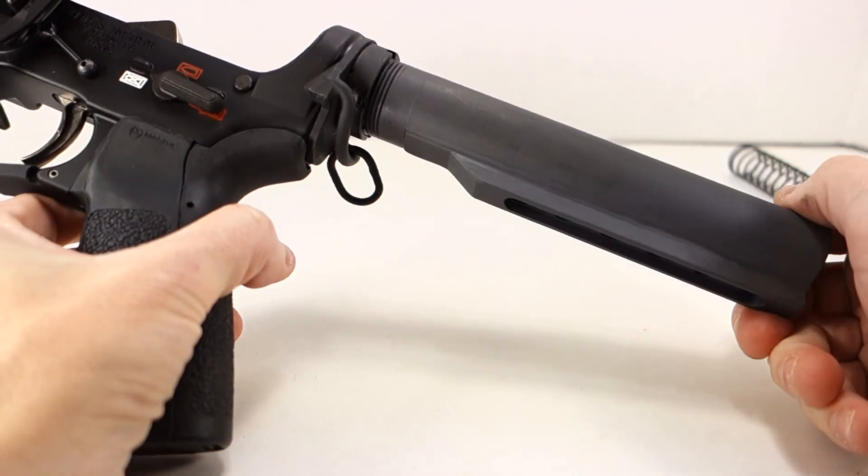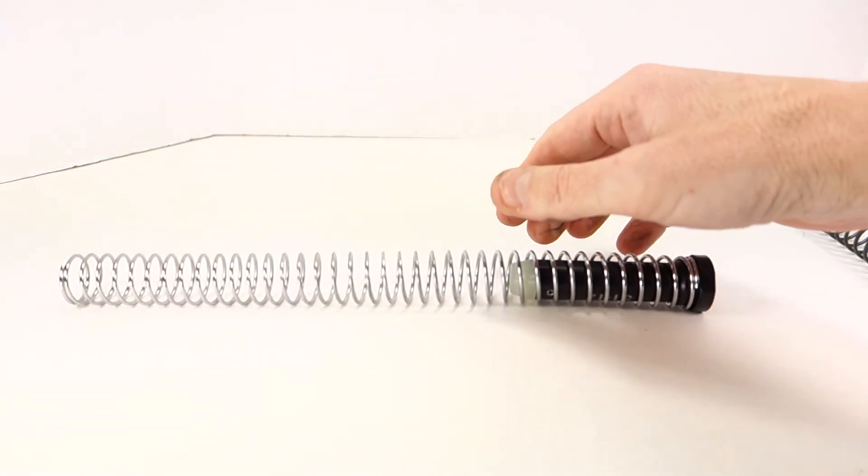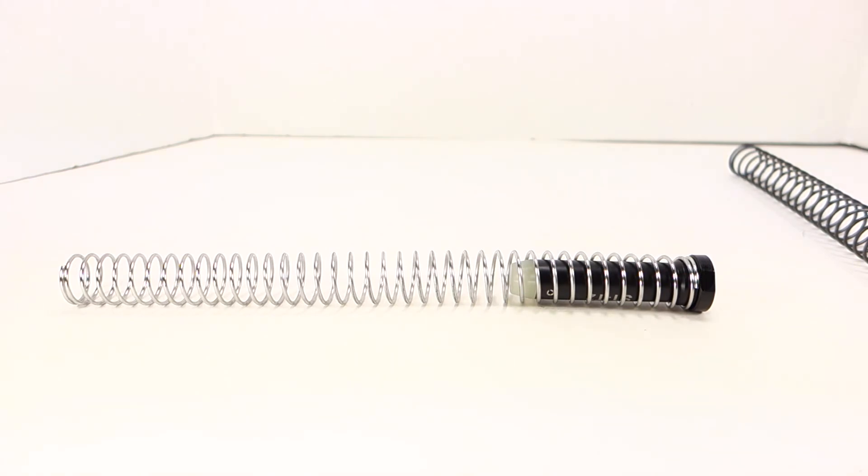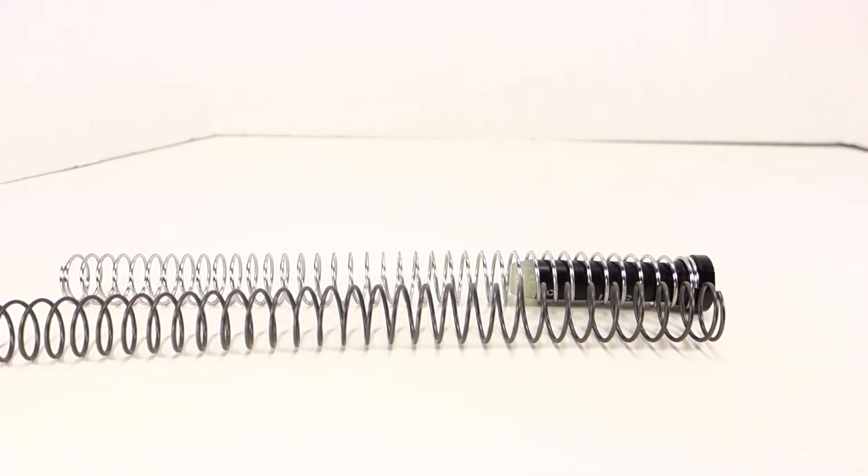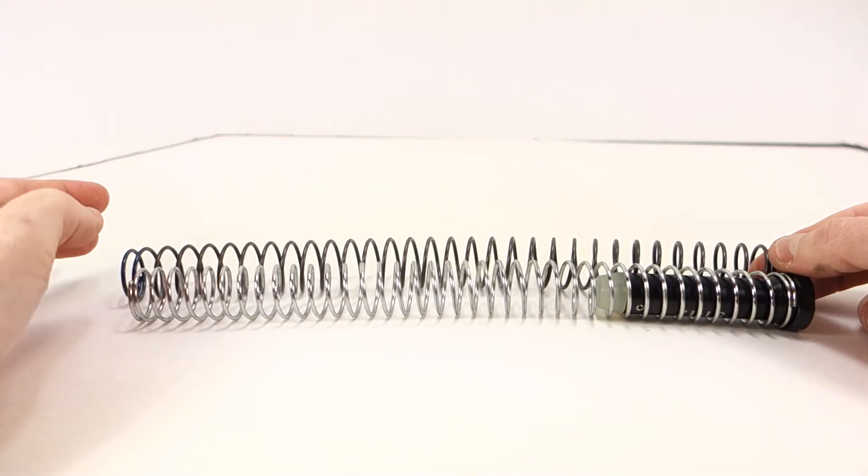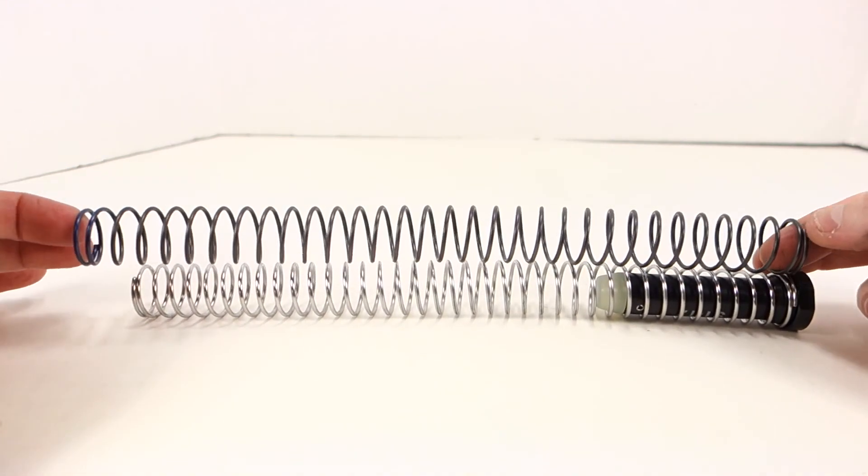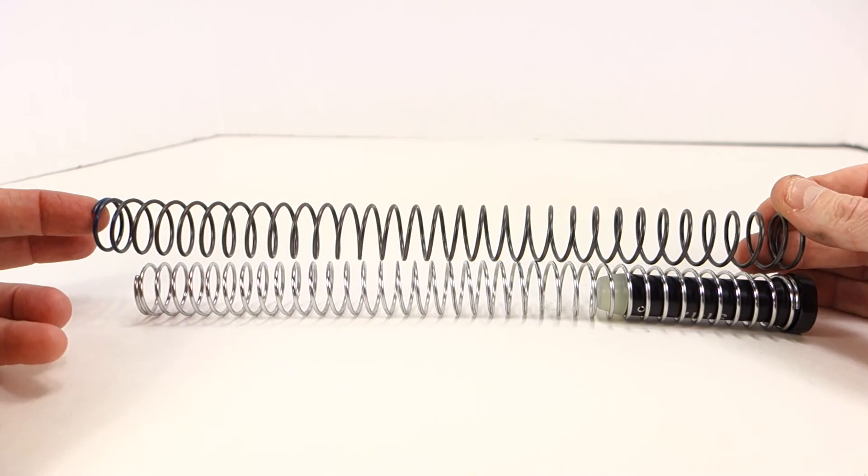I'm going to go ahead and remove this. Here's the Spikes buffer tube spring and here is the Sprinko. It appears that the Sprinko has already got some grease on it or something. The Sprinko is longer when you compare it to the Spikes stainless steel spring. This is what I saw when I did the review of the JP Enterprises enhanced power spring as well - that was longer than the stainless steel spring.